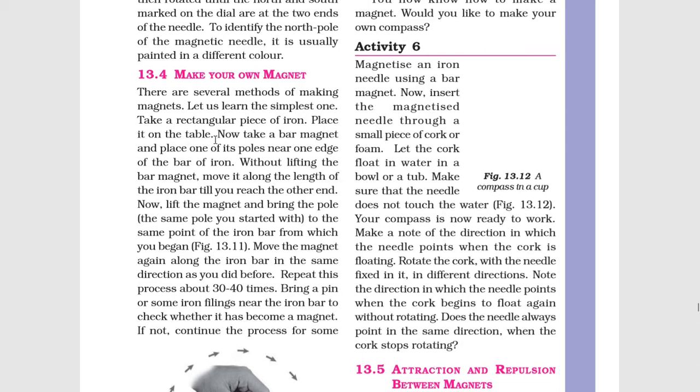Take a rectangular piece of iron - ek aita ka tukda lena hai lohe ka. Place it on the table. Now take a bar magnet and place one of its poles near one edge of the bar of iron. Chumbak ko bina hattaye, is lohe ki chad ke ek sireh se dusre sireh tak le jaiye.